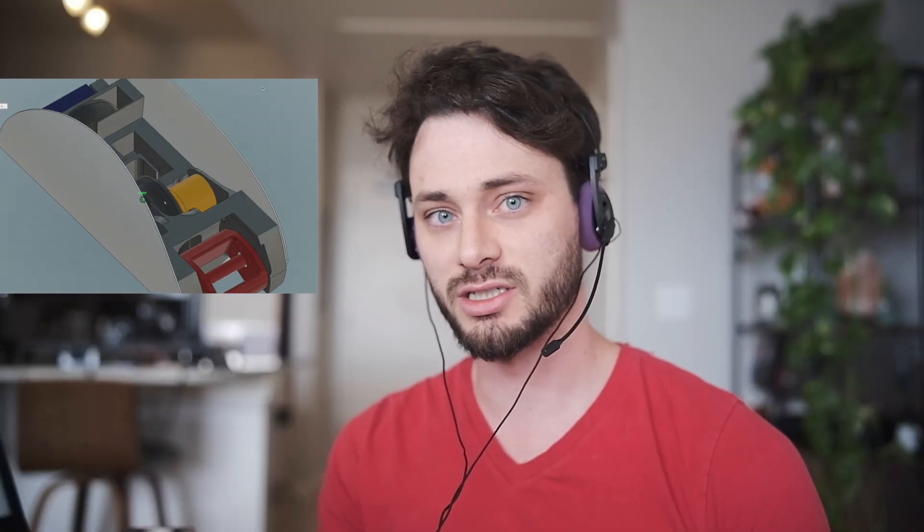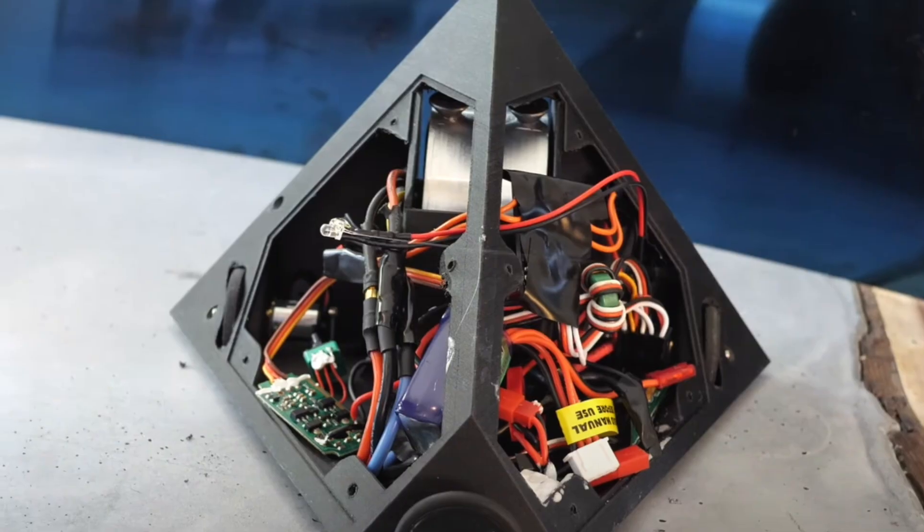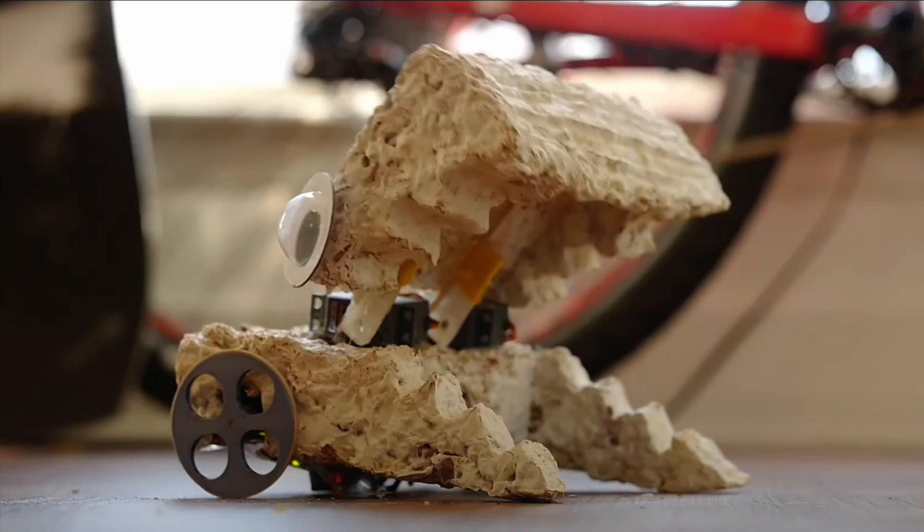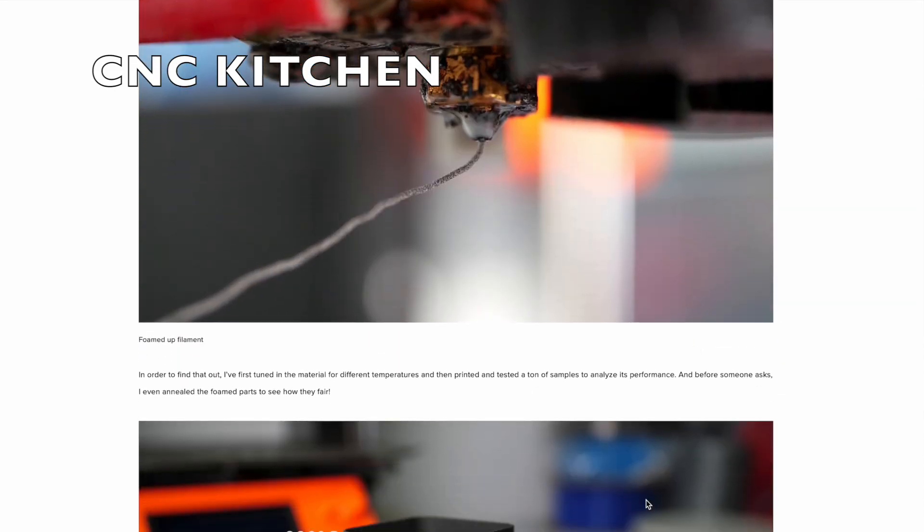So now that I have this delicious design, I need to figure out what material I'm going to 3D print it out of. In the past, I've used metal, UHMW, which is the best, nylon, carbon fiber infill nylon, which is the second best, carbon rods, ABS, fungi, and, of course, foam board.